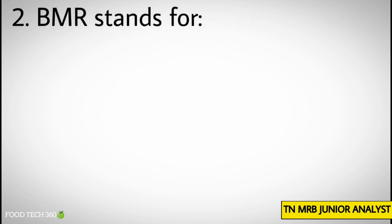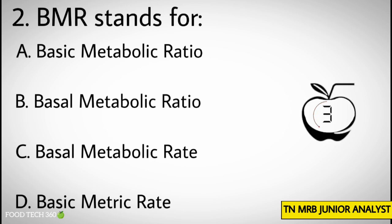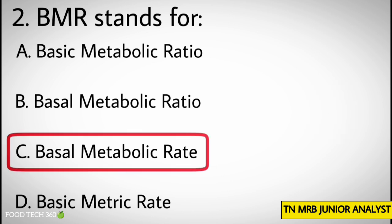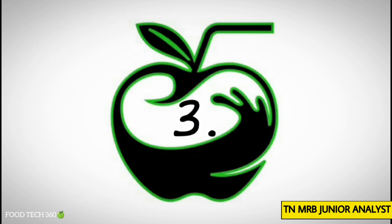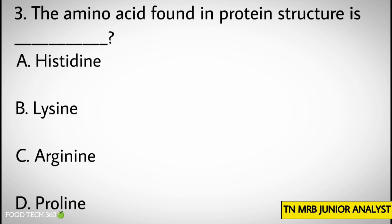Question number 2: BMR stands for — Options: A. Basic Metabolic Ratio, B. Basal Metabolic Ratio, C. Basal Metabolic Rate, D. Basic Metric Rate. Correct answer: C. Basal Metabolic Rate.